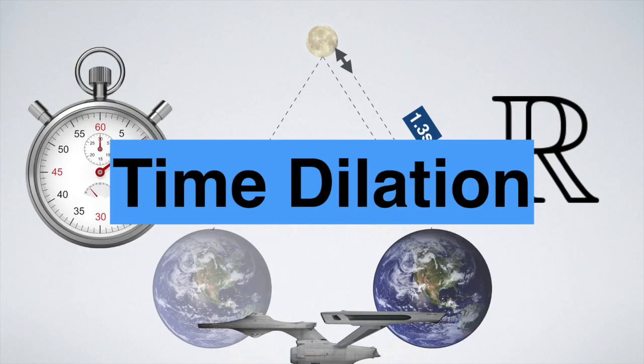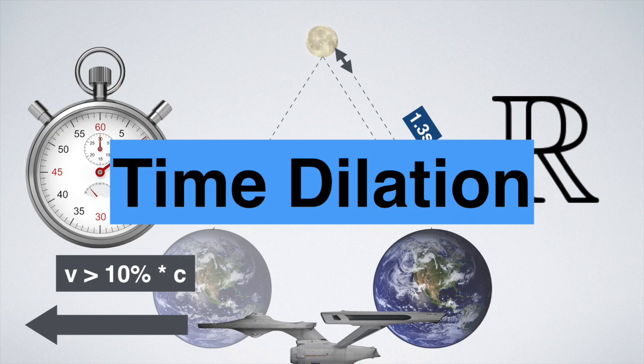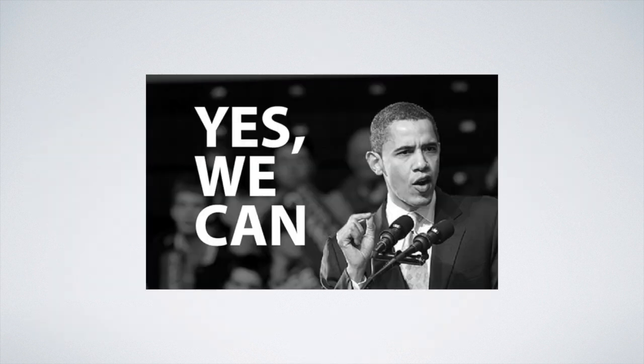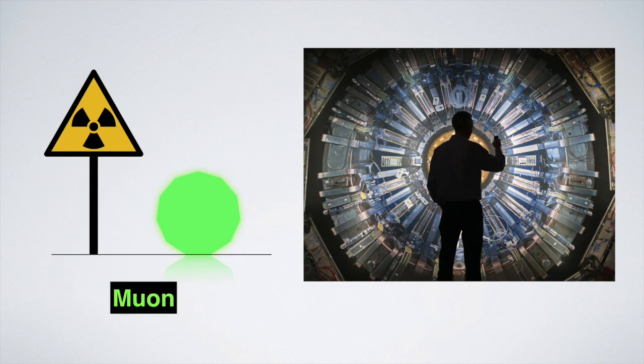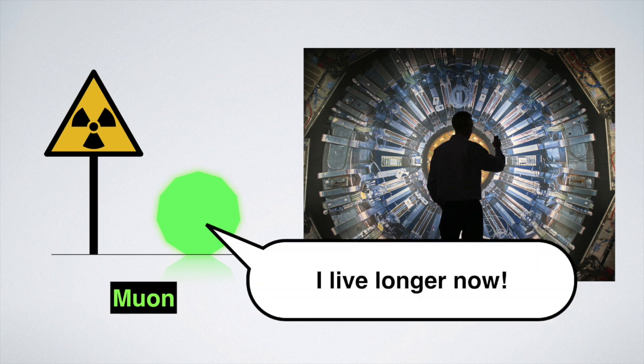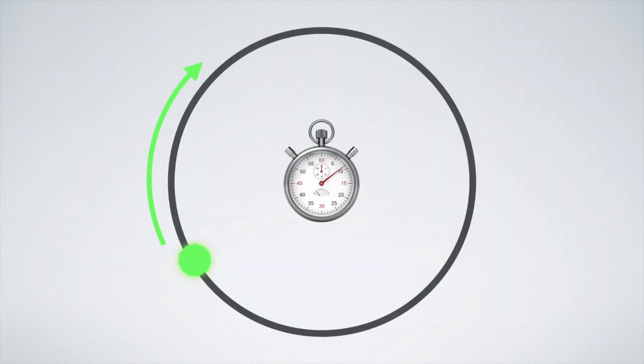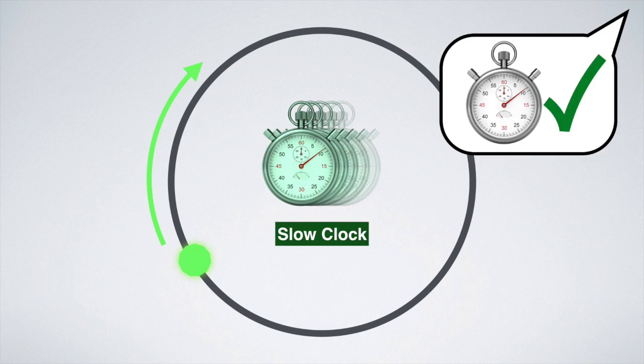With current tech, this effect is only measurable at very high speeds. Still, we can measure it. When myons are sped up in a particle accelerator, they decay more slowly. This is because the time of an accelerated myon runs slower when measured by a resting scientist.